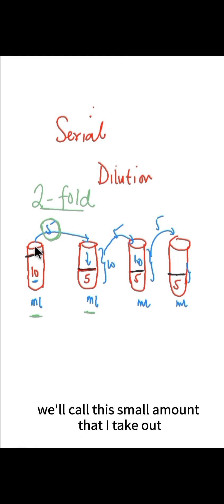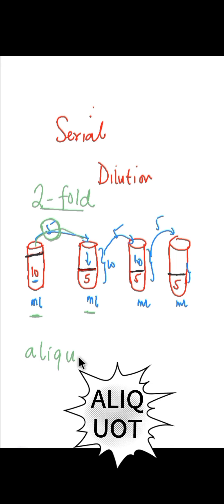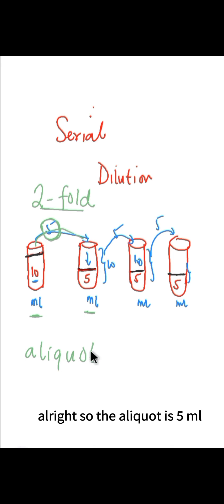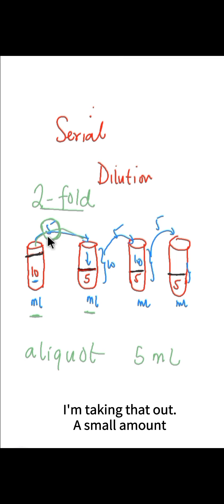We'll call this small amount that I take out an aliquot. Alright, so the aliquot is 5ml—I'm taking that out, a small amount. And then when I...